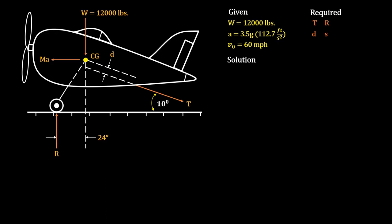On contact of the airplane with the arresting cable, the airplane is decelerated to the right relative to our figure. The motion is pure translation horizontally. Therefore, our inertia force is calculated by F equals MA, where F is our inertia force, M is the mass, and A is the acceleration. Moreover, our mass can be written as weight over gravity. Let's substitute that accordingly.